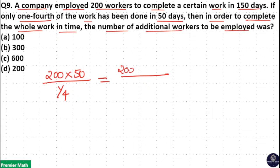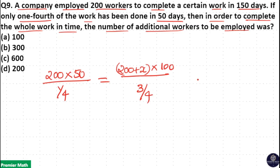So 200 plus the additional number of employees should complete 3 by 4 of the work — that is, 1 minus 1 by 4 equals 3 by 4 — in 150 minus 50 days, that is 100 days.